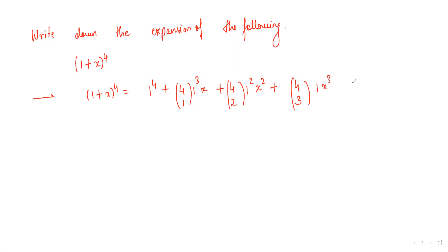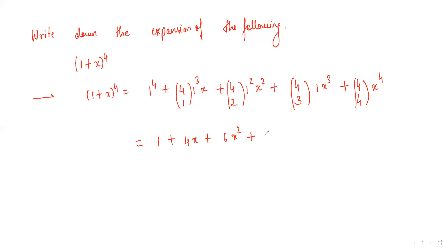...plus 4C4 · x^4. This simplifies to 1 + 4x + 6x² + 4x³ + x^4. So this is the expansion of (1 + x)^4.